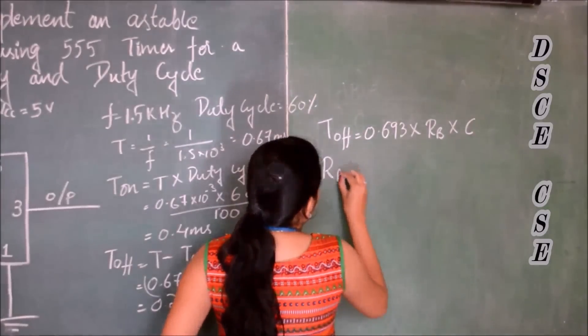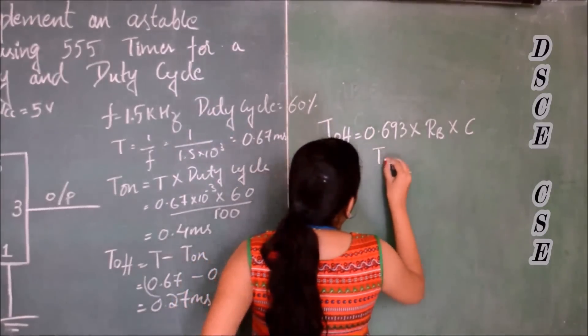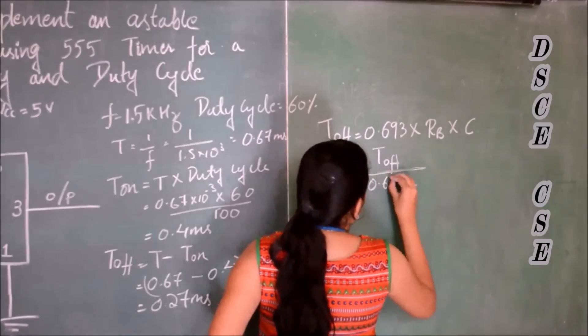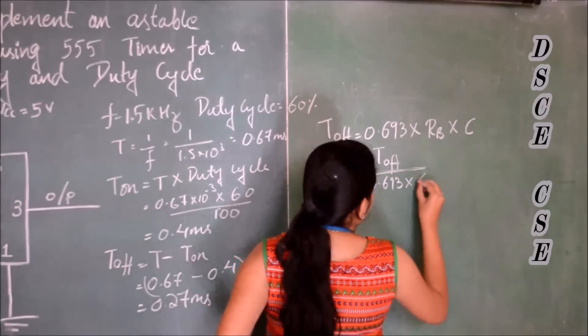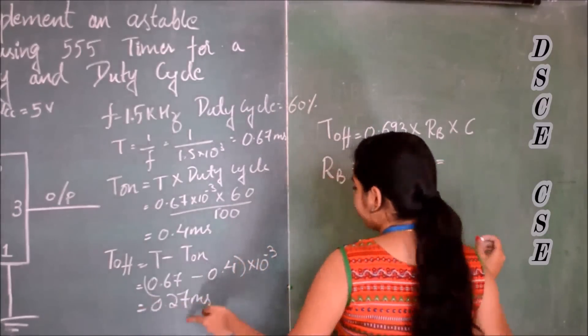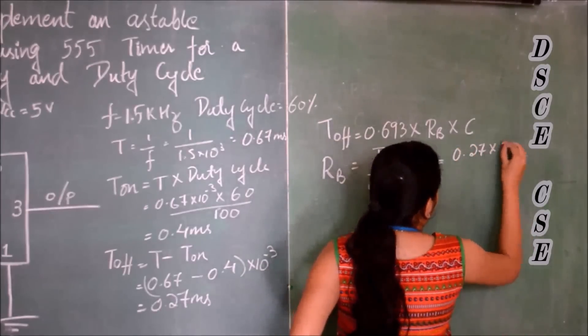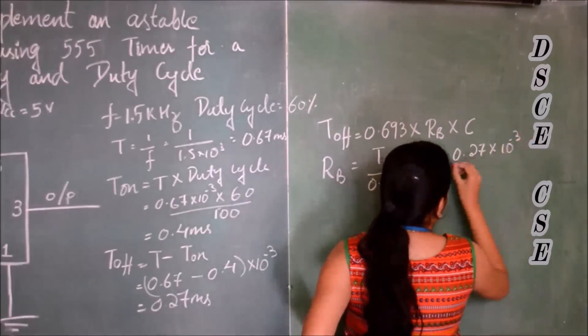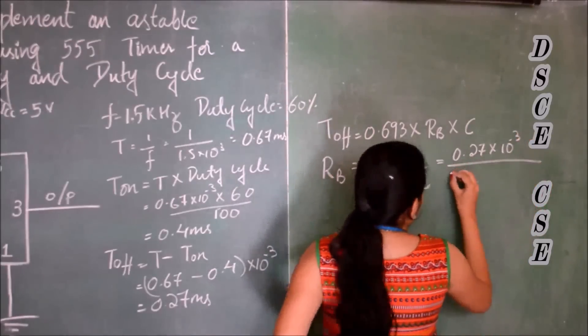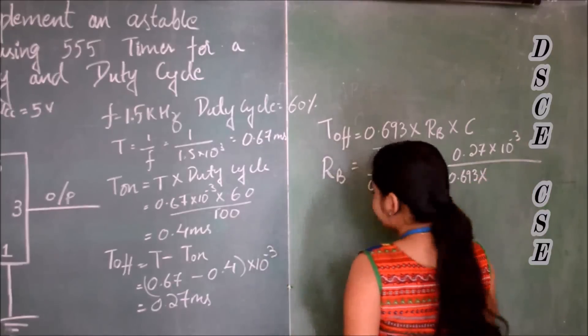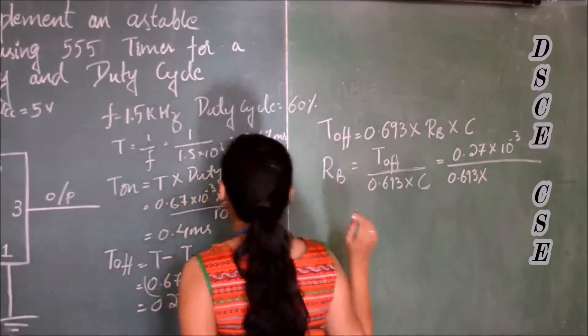So RA is equal to T_on by 0.690 into C. The value of T_on is 0.27 milliseconds. The value of T_off is 0.192 milliseconds.